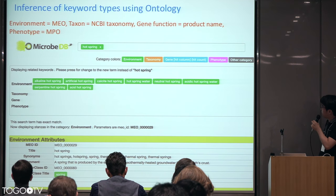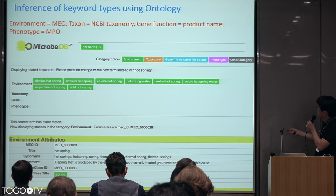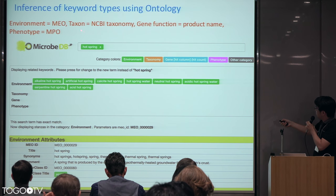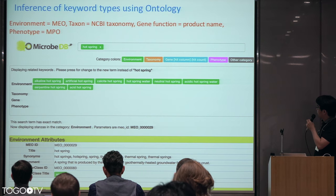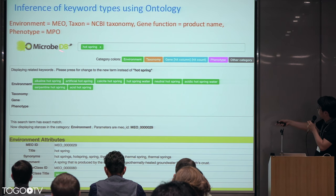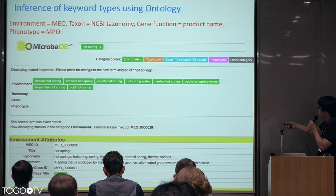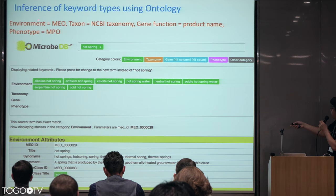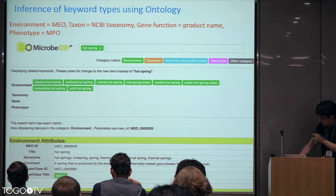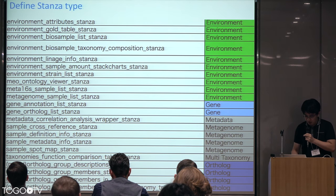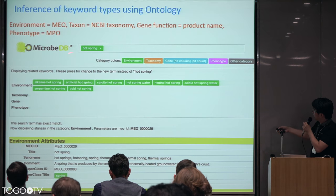By defining Stanza types, we can efficiently manage keyword searches within each type. In the case of environment, we use the MEL ontology. In the case of taxon, we use NCBI taxonomy. In the case of gene function, we use product names in INSDC. In the case of microbial phenotype, we use MPO. After searching the keyword against the appropriate ontology, we can identify what type that term belongs to — for example, 'hot spring' is an environment type — so we only search environment-type Stanzas, making the search efficient.